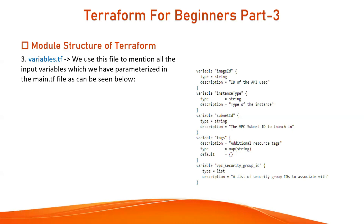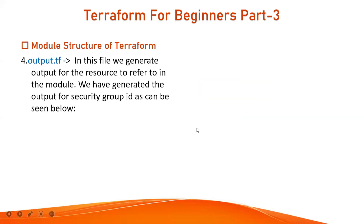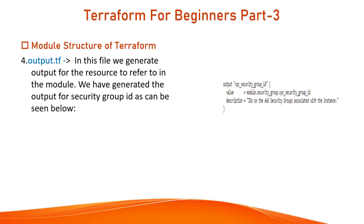Now let's move to the next important file, which is output.tf. In this file, we generate the output for resources to reference in the module. For example, we generate output for the security group — defining an output called VPC security group ID and displaying the group ID from the module, which we defined in main.tf.